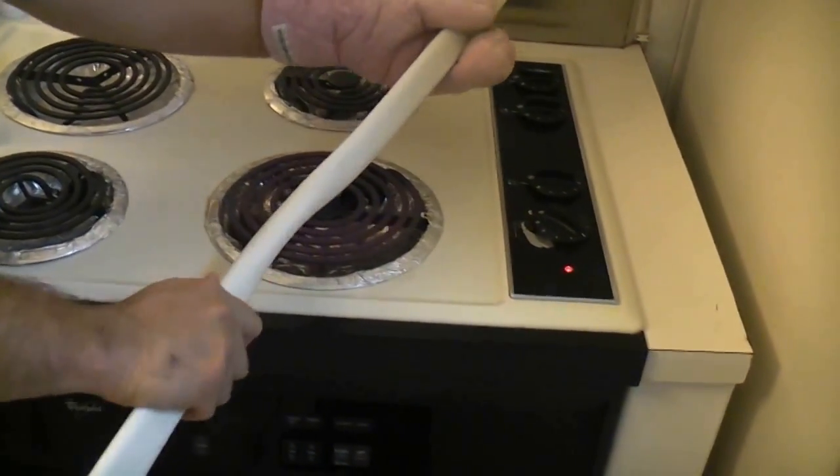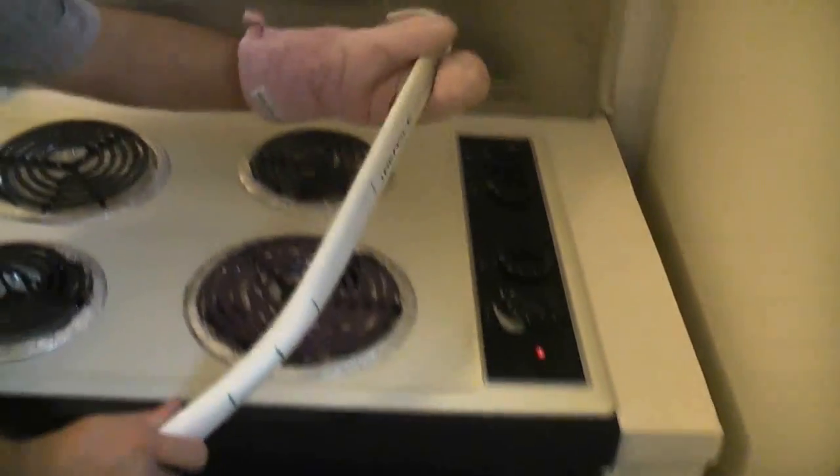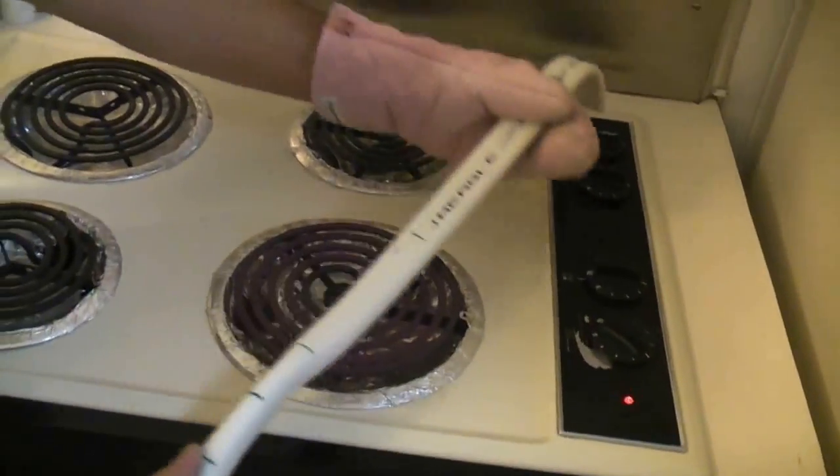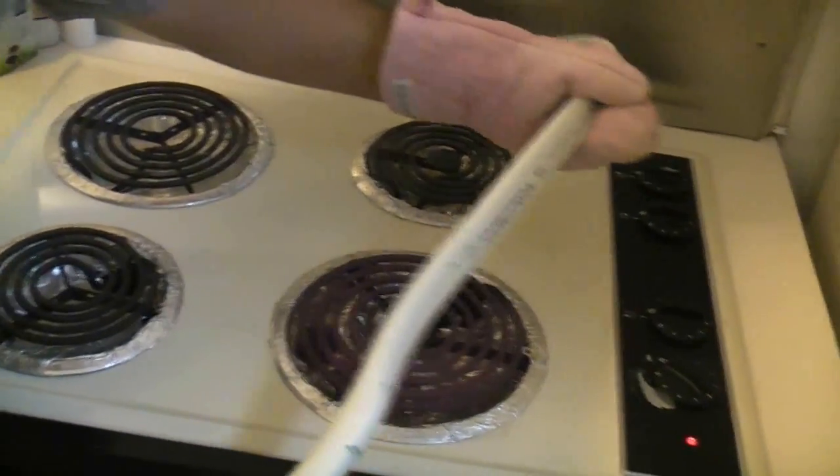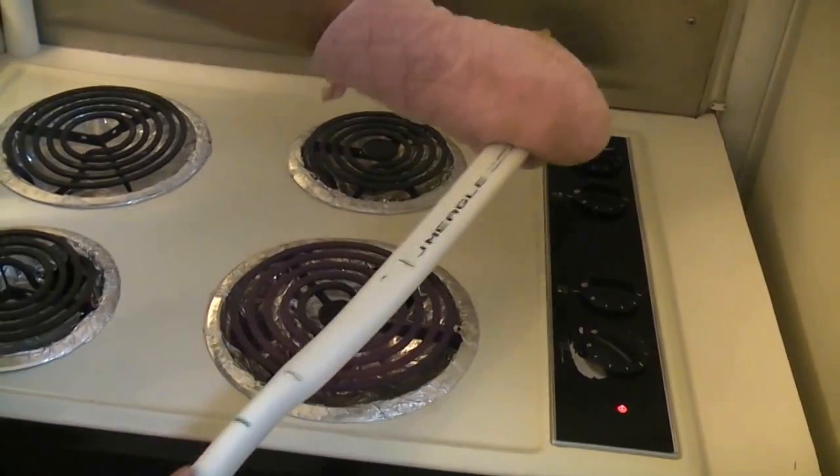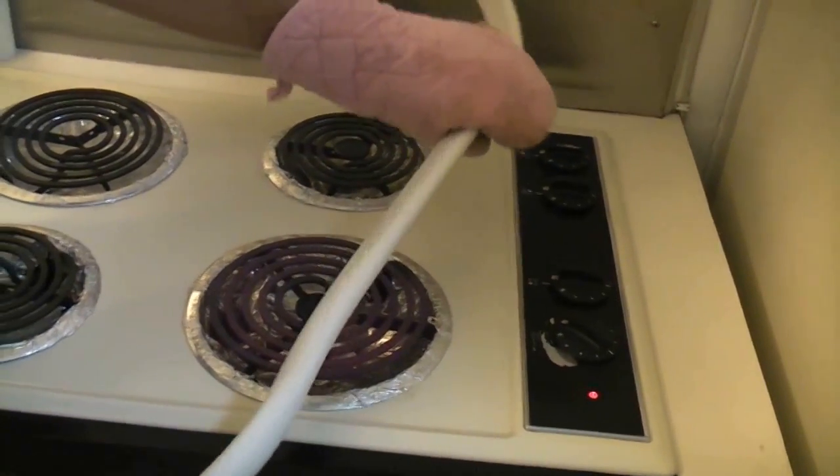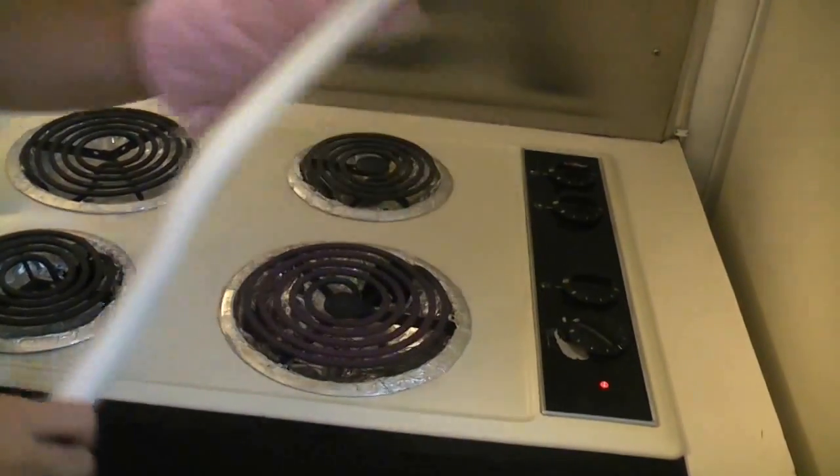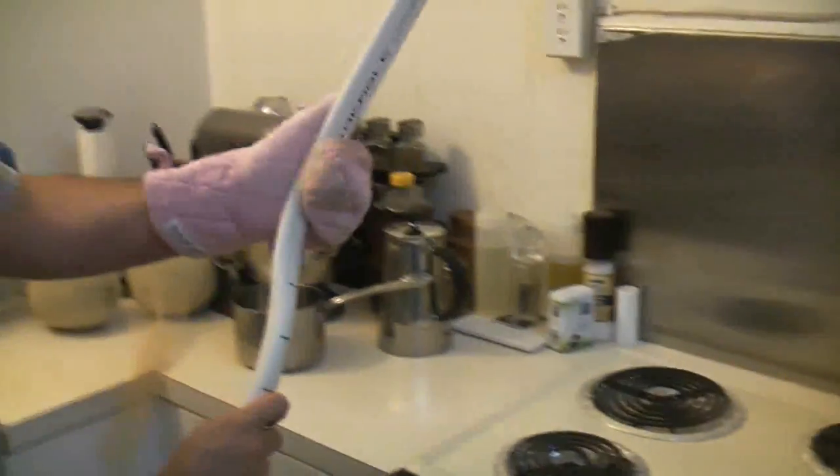So you just want to gently heat until you can start seeing—you can see how it's starting to get some flex there. So you want to gently heat it and bend it. You want the flex to be evenly distributed along the 6-inch portion. There we go.